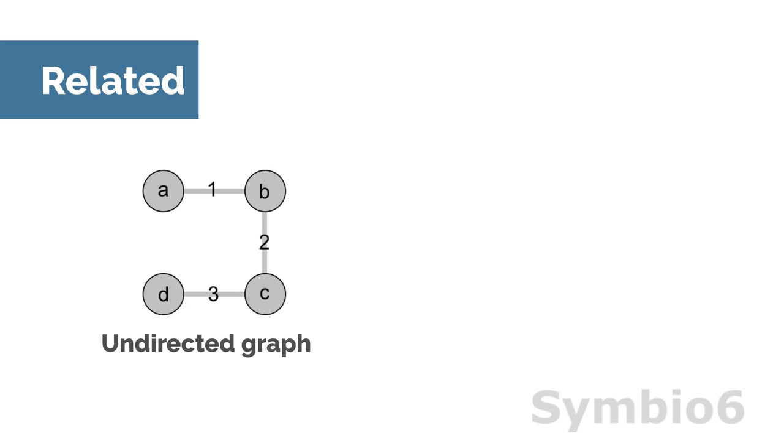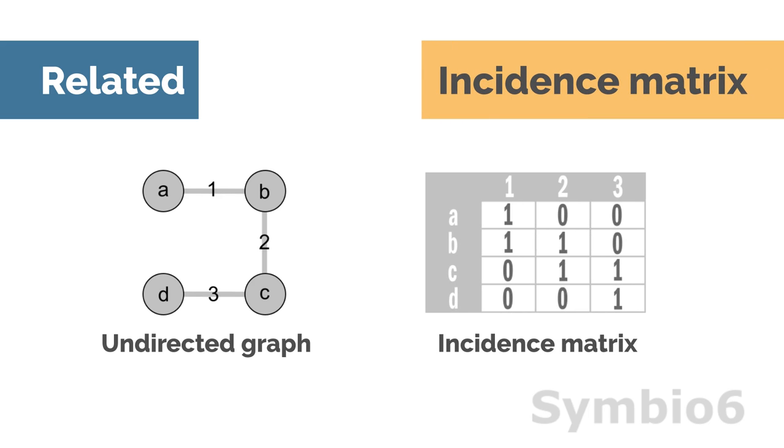A related concept is the incidence matrix of a graph. This matrix shows the relationship between vertices and the edges of a graph. An element is 1 if a vertex and edge are incident and 0 if they are not.